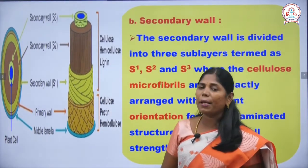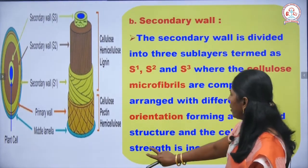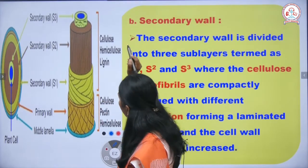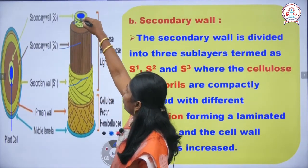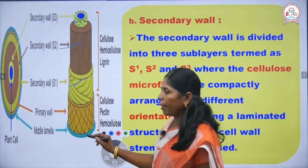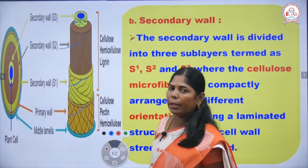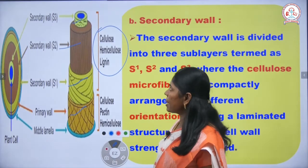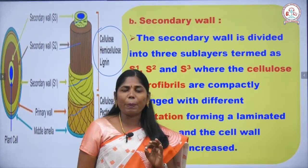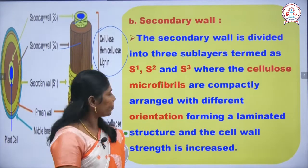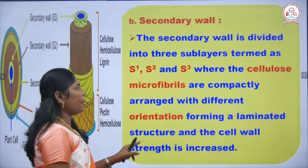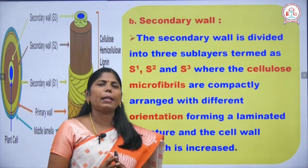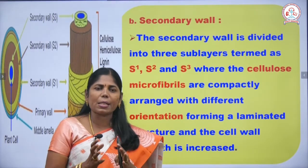The secondary wall is divided into three sub-layers: S1, S2, and S3. From outside inward: middle lamella, primary wall, then secondary wall (S1, S2, S3). The cell wall materials in S1, S2, S3 are cellulose, hemicellulose, and lignin. Pectin is present in the primary wall. Microfibrils are loosely arranged in the primary wall but compactly and tightly arranged in the secondary wall, making it very thick and strong.